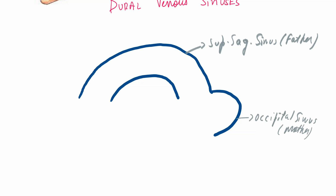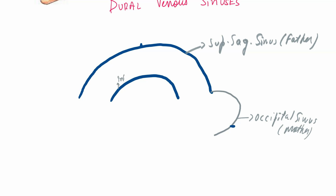So what happens next: the superior sagittal sinus and the occipital sinus get married together and have their own son, which is called the inferior sagittal sinus. Let's call this sinus the son of the two.